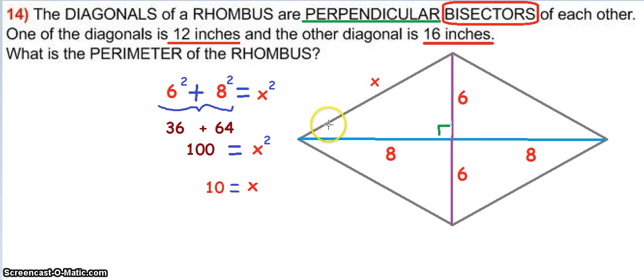Making x equal to 10. Therefore, one side of the rhombus is 10, and 4 times 10 gives us 40, so the entire perimeter is 40 inches.